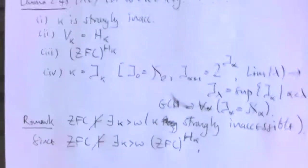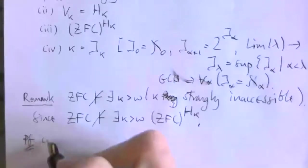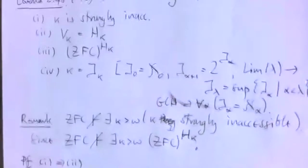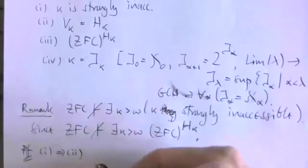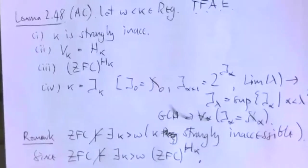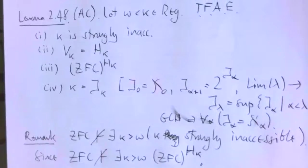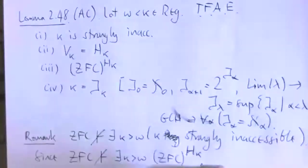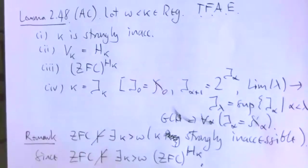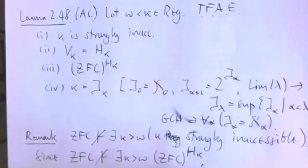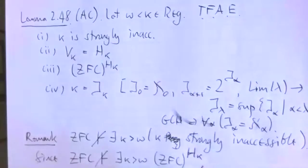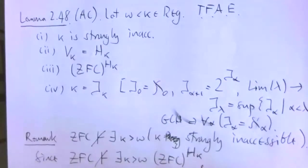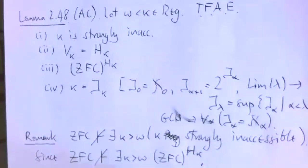So we'll look at the chain of implications, going in a cycle around the various clauses. We'll look at the consequences we have. Kappa is a regular cardinal — this already implies that H_kappa is contained in V_kappa. So we have one inclusion already; this was Lemma 2.3.1. It's the reverse inclusion we need to establish to get (1) implies (2).